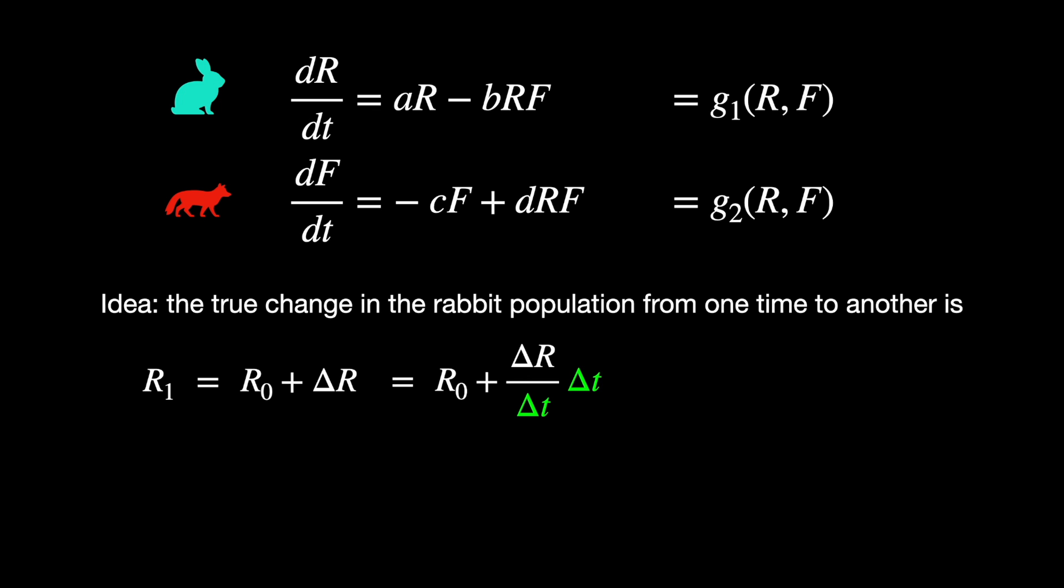What we can do is take ΔR and multiply it and divide it by Δt, where Δt is how much time is elapsing over the course of this change. Notice I still have equality here because I'm going to multiply and divide by the same term. But now we're going to bring in an estimate. Notice the change in R divided by the change in t is a difference quotient. If I took the limit of this quotient as Δt went to zero, it would give us a derivative, it would give us dR/dt.